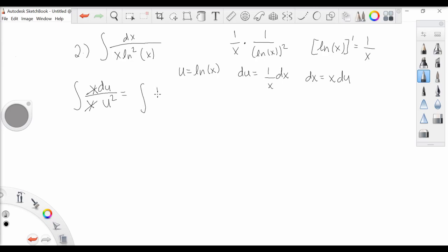We're left with the integral of one over u squared du. Using the reverse power rule, we can easily show that when we add one to the exponent, we get negative one.